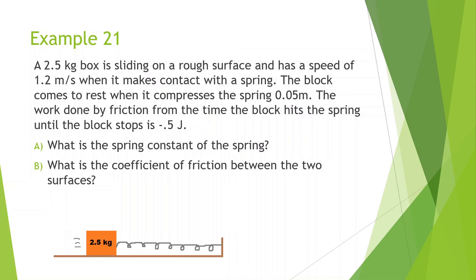A 2.5 kilogram block is sliding on a rough surface and has a speed of 1.2 meters per second when it comes into contact with the spring. The block comes to rest when it compresses 0.05 meters. The work done by friction from the time the block hits the spring until the block stops is negative 0.5 joules. What is the spring constant? Mechanical energy initial plus work non-conserved equals mechanical energy final. At the beginning the block is moving, so it has kinetic energy. While it moves there's friction acting on it, and at the end it compresses the spring, so there's all elastic potential energy.